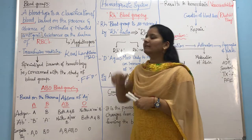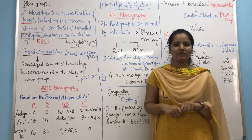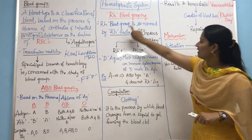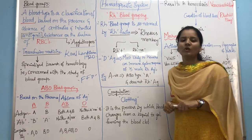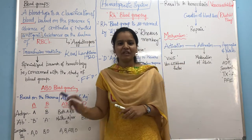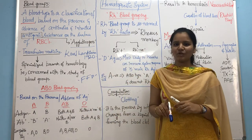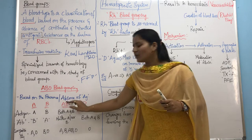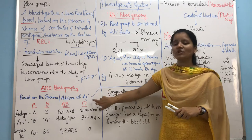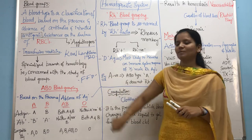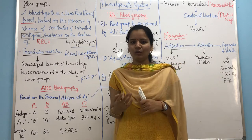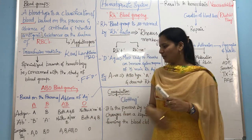Blood grouping has been widely done into two groups: ABO blood grouping and RH blood grouping. The ABO blood grouping is specifically done based on one criteria — that is, based on the presence or absence of antigen. Based on this, blood groups are categorized into four types: A, B, AB, and O.